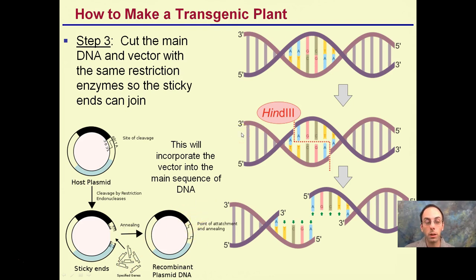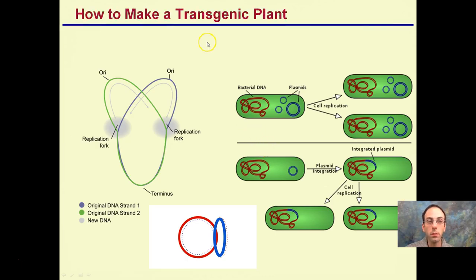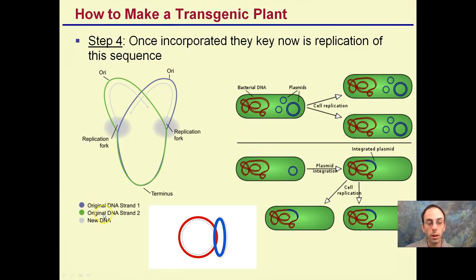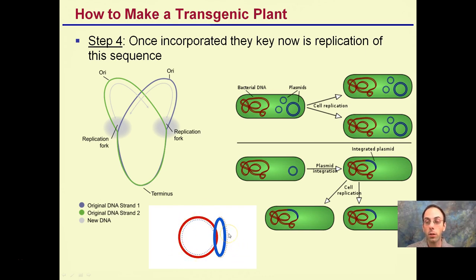The cell reads the inserted sequence as normal. You can see the original strand — strand one and strand two — our circular DNA. Once incorporated, the key is replication of that sequence. We want those cells to multiply as quickly as possible, those plasmids to exponentially multiply. We can also integrate our plasmid into the host DNA sequence and multiply that way.